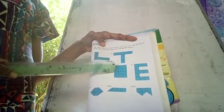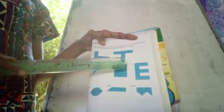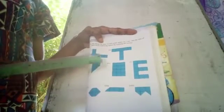4. 1, 2, 3, 4, 5, 6, 7, 8, 9, 10, 11, 12. 12 square cm.